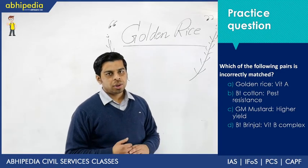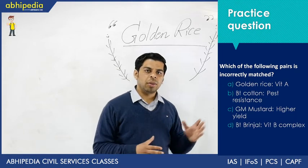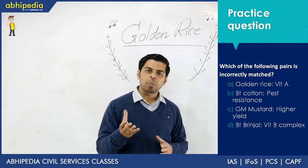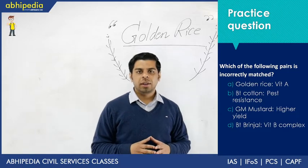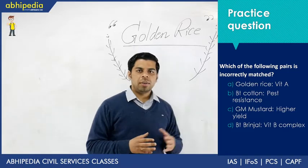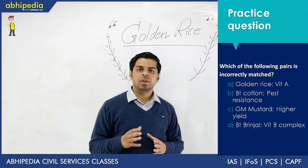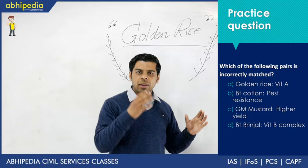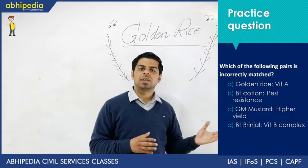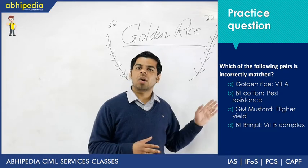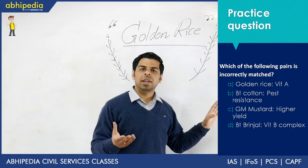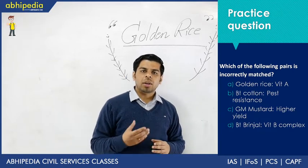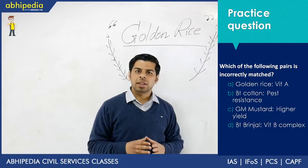Now for the practice question — pick the incorrectly matched pair from popular GM crops. Golden Rice has Vitamin A content, so Vitamin A deficiency is a theme to prepare. Also go through all vitamins — examiners tend to confuse you with deficiency disorders and ideal sources. For Vitamin A, cod liver oil is considered the best source, along with green leafy vegetables like spinach. Then BT Cotton, as discussed, mainly deals with pest resistance against the pink bollworm, which damages cotton.